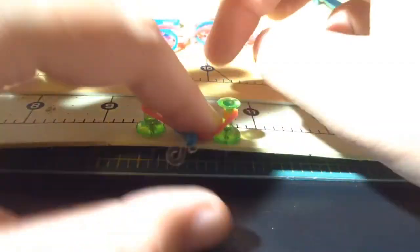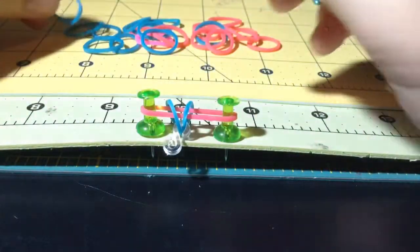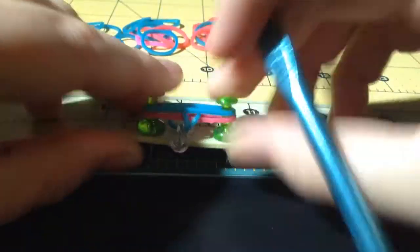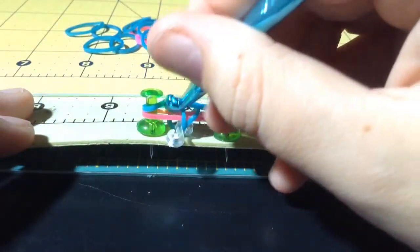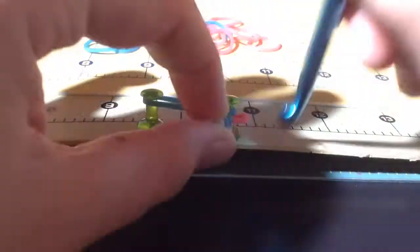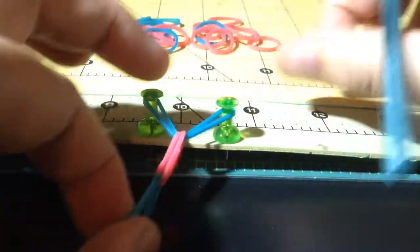Then what you're going to do is whatever color is on top, you're going to add another one of those rubber bands. And you're just going to do it straight across like normal. Make sure your pegs are in. Then just loop under it and let it go on top. And then this second time should be really easy.